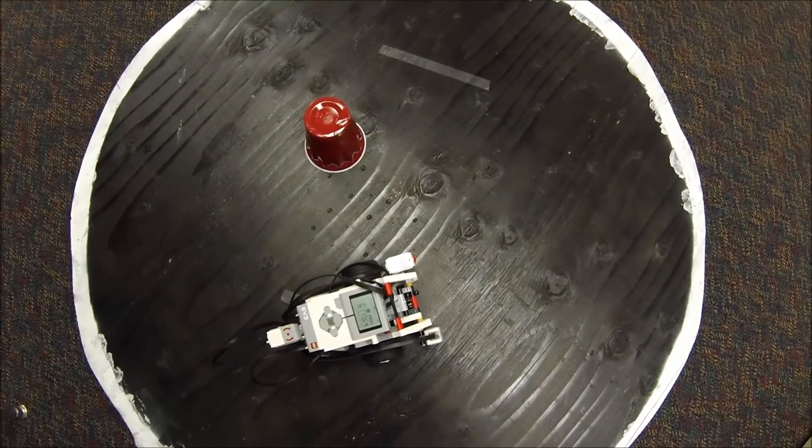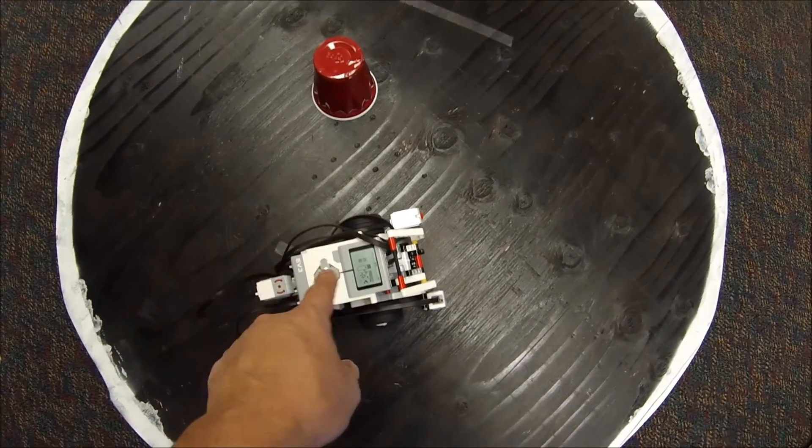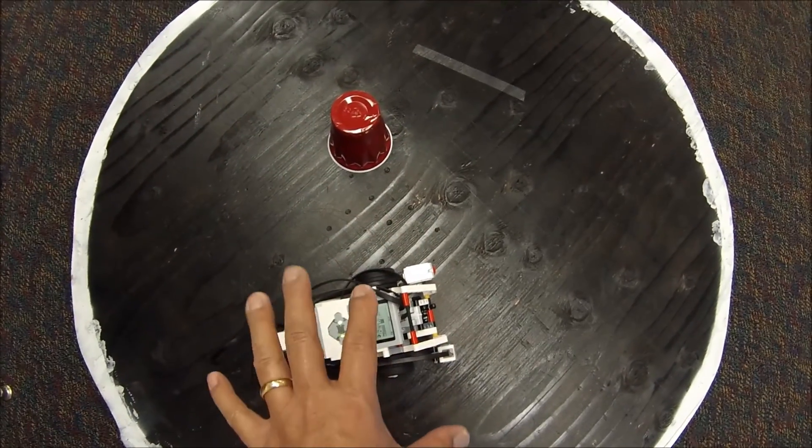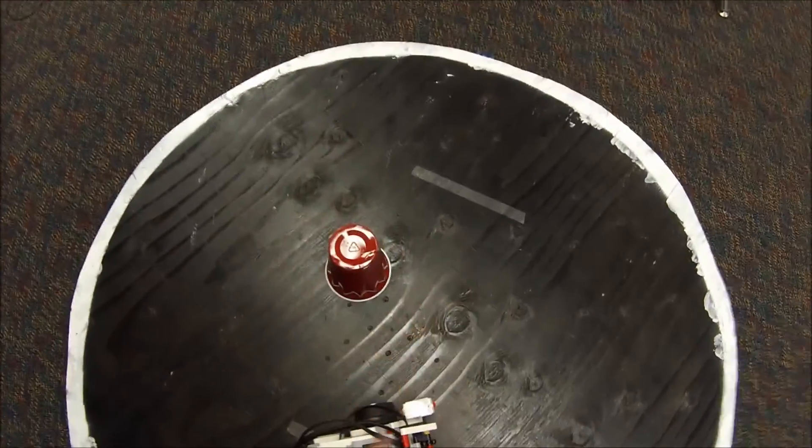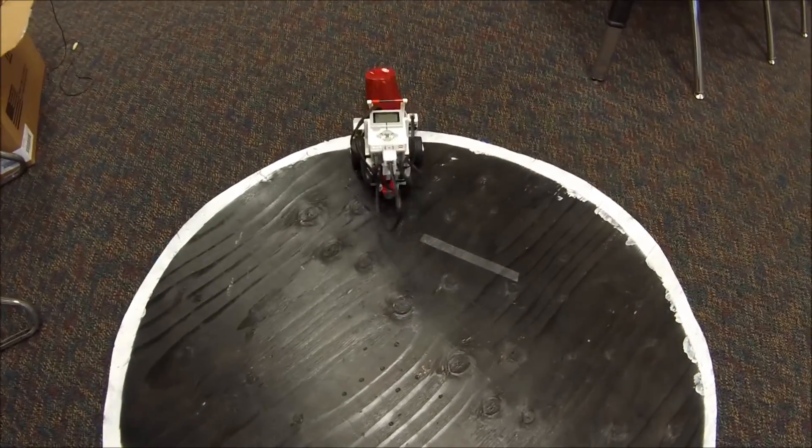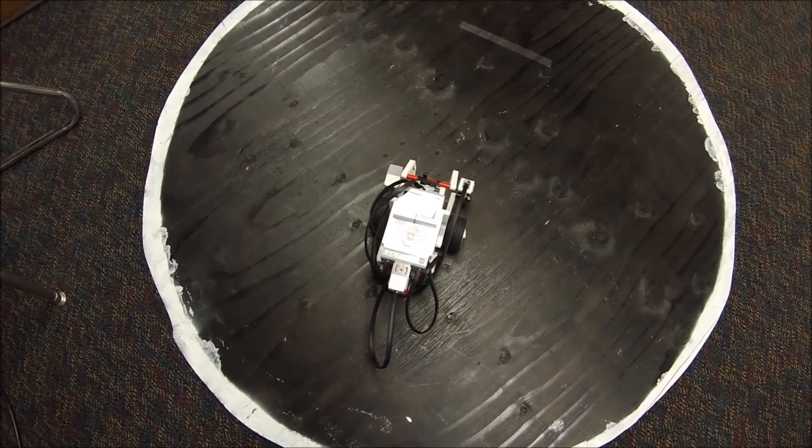Okay, here we are at the sumo table. Here's the robot. There's the cup. And when I press the start button, hopefully it'll spin, pick up the cup, push it off. And if it senses white, it'll back up for those two seconds. So let's see how it goes. And there we go. Thanks for watching.